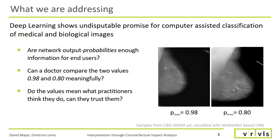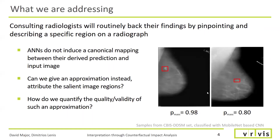Can a doctor compare these two values meaningfully? Do the values even mean what practitioners think they do, and can they trust them? Consulting radiologists will routinely back their findings by pinpointing and describing a specific region on a radiograph, thereby providing an interpretation of the work. Isn't it reasonable to expect the same for artificial neural networks?